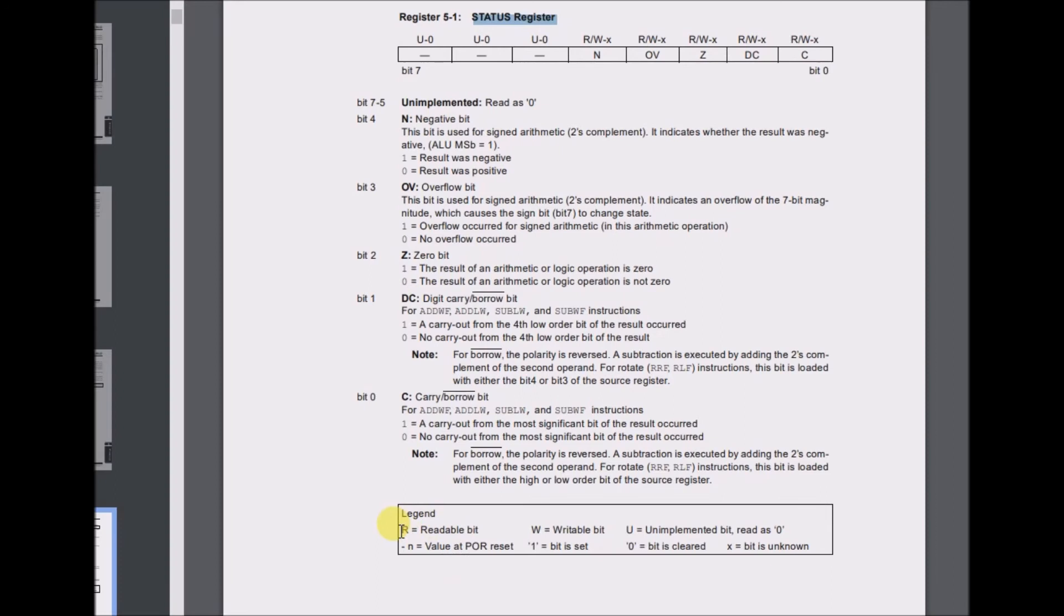I'll read the legend. R is a readable bit. W is a writable bit. U is an unimplemented bit, read as 0. N, or minus N, is the value at POR reset, power on reset. 1 equals bit is set. 0 equals bit is cleared. X equals bit is unknown.